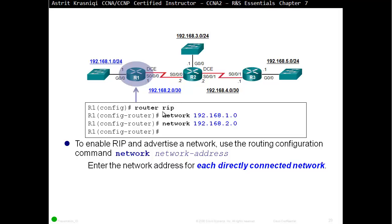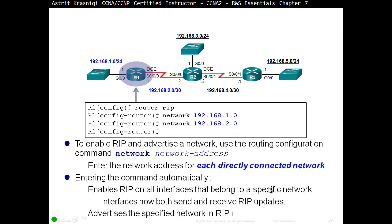By default, RIP is version 1, and there's no way to add classless addresses — it's a classful routing protocol. To enable RIP and advertise networks, use the network command followed by the network address for each directly connected network. Entering this command automatically enables RIP on all interfaces belonging to that specific network. Interfaces will both send and receive RIP updates.